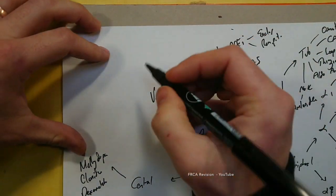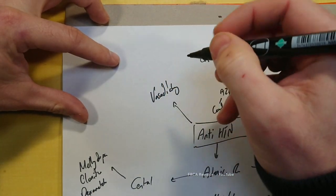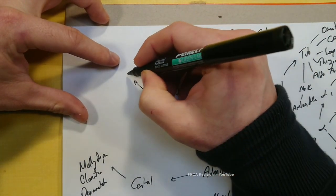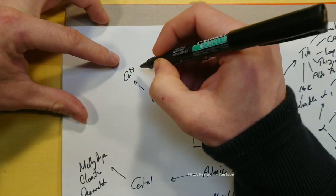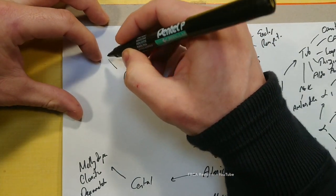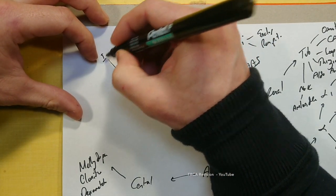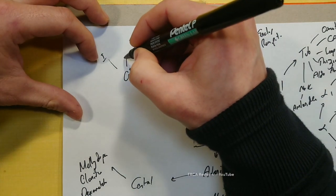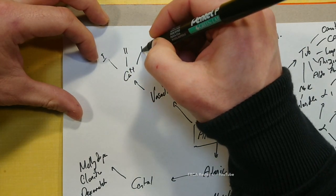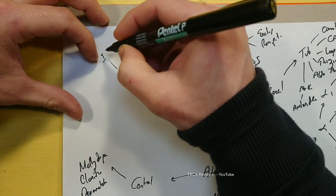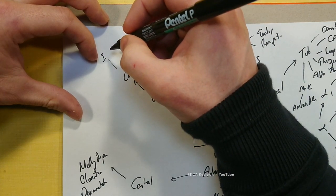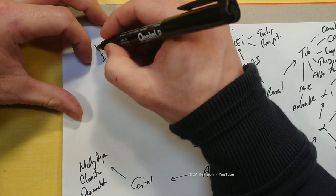If we look at the vasodilatory, these can be split up into calcium channel antagonists. And these can be split up into groups 1, groups 2, and groups 3. Group 1 is the phenylalkanes, which include verapamil, so these are more cardiac-selective.